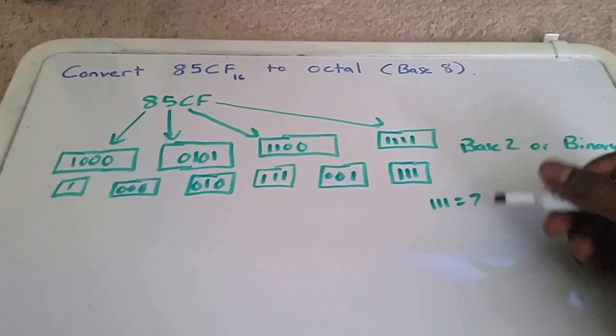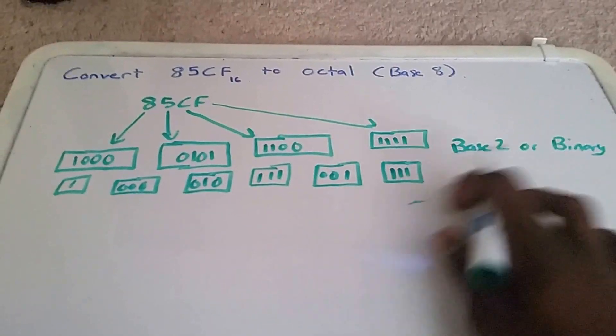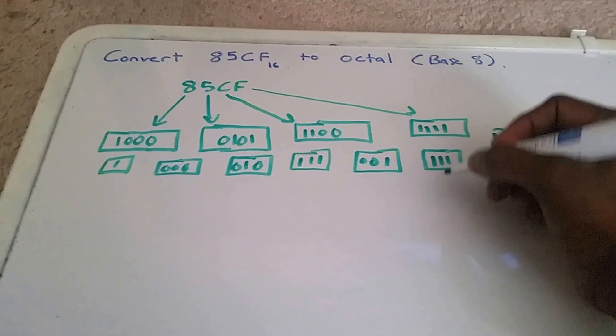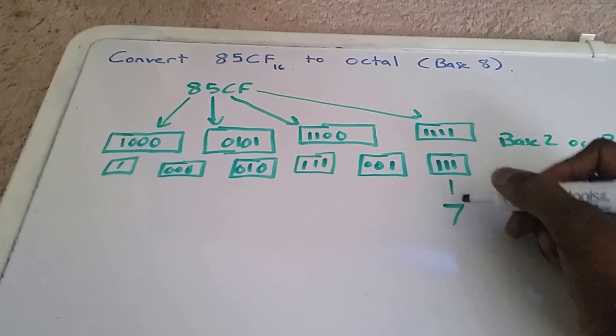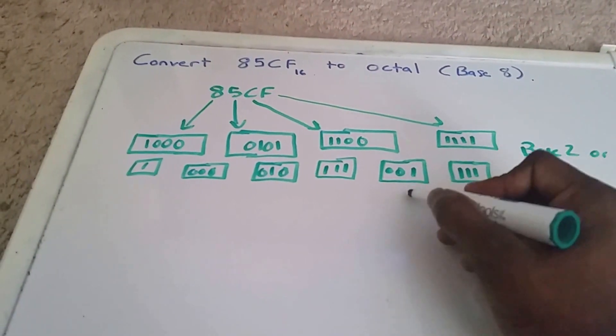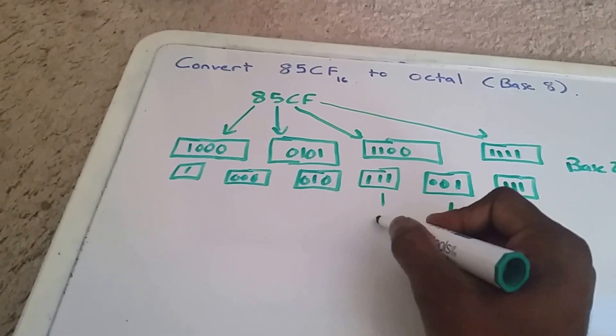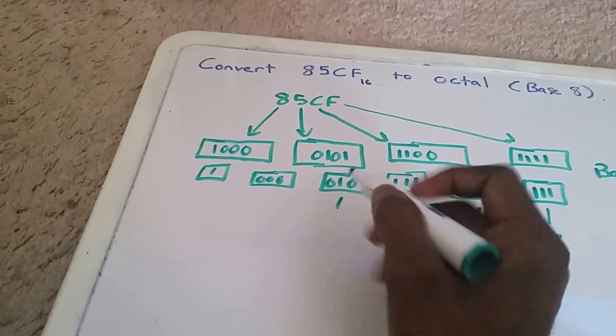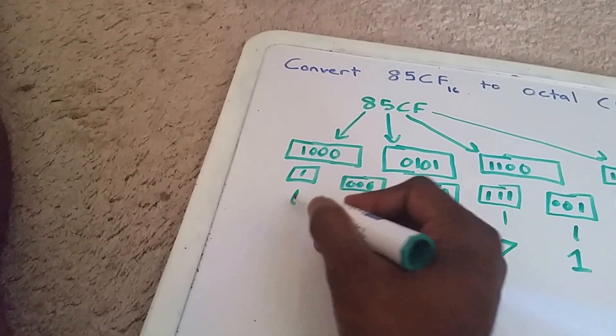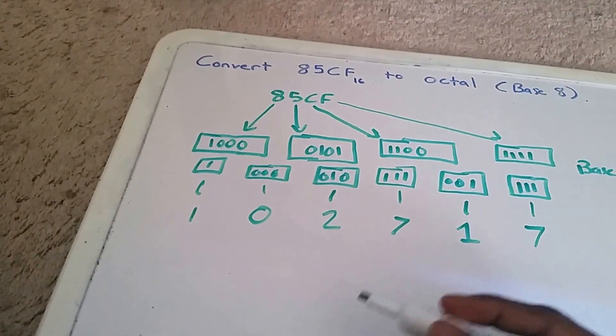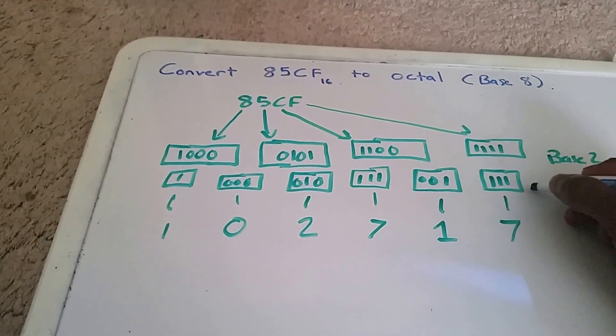Now what we do is we take these numbers and we transpose them. So 111 is seven. 001 is one. 111 again is seven. 010 is two. 000 is just zero. And then one, we have a one here. Okay, so this is still base 2.